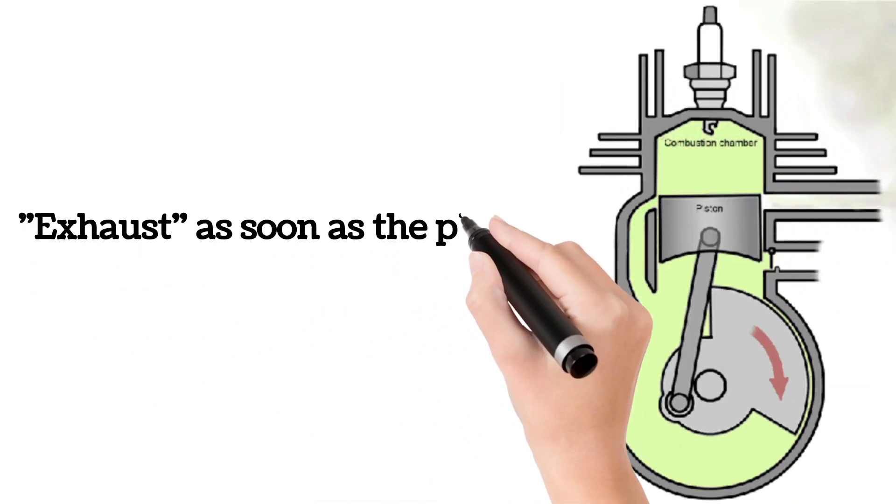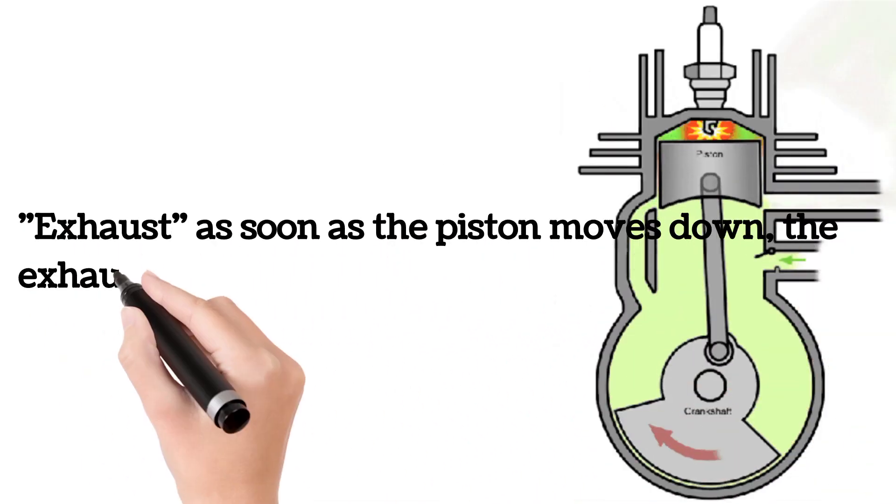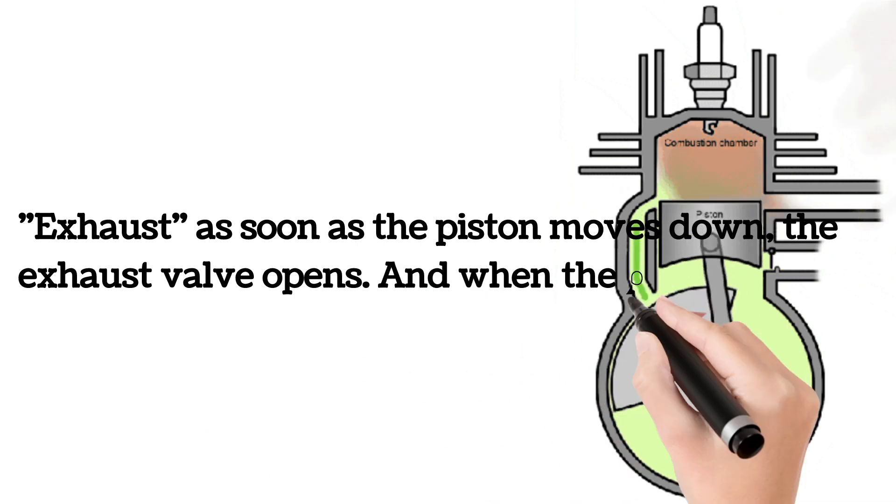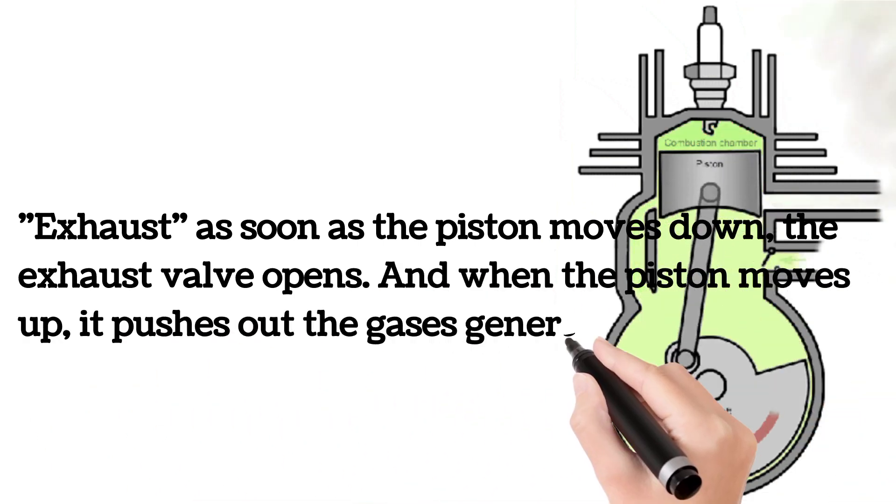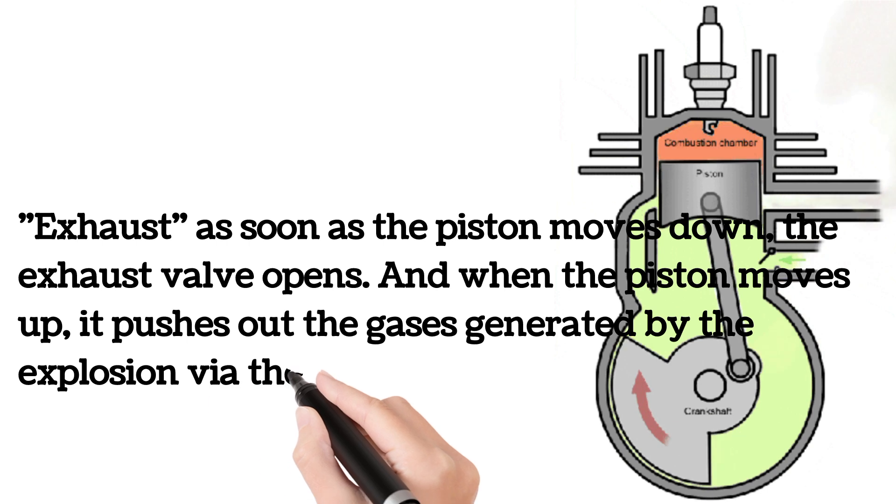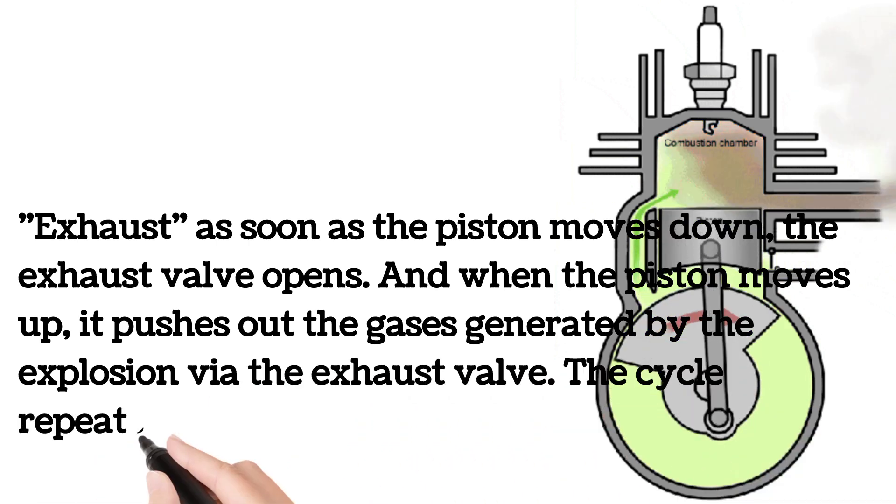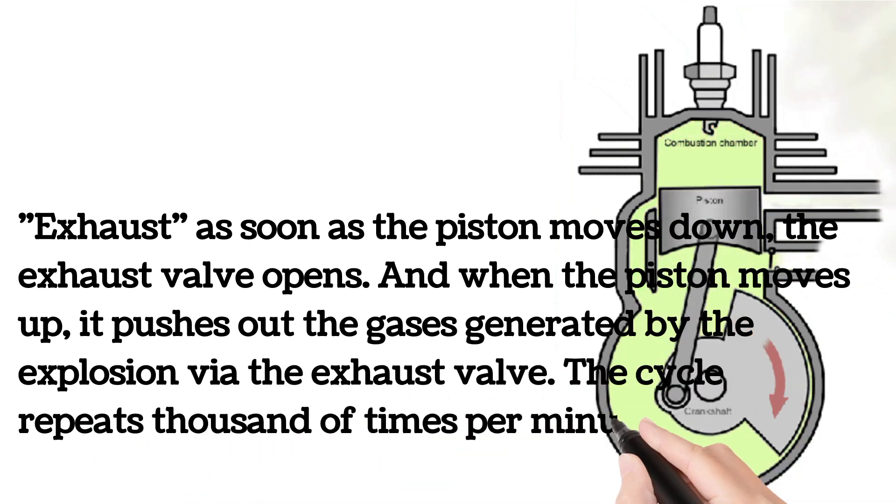And last, number four: Exhaust. As soon as the piston moves down, the exhaust valve opens. And when the piston moves up, it pushes out the gases generated by the explosion via the exhaust valve. The cycle repeats thousands of times per minute to power the vehicle.